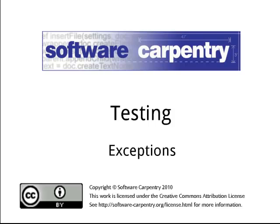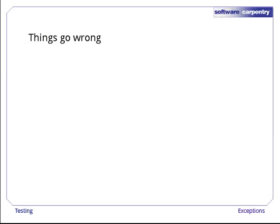Hello and welcome to the second episode of the Software Carpentry lecture on testing. In this episode, we're going to show you how to handle errors in programs using exceptions. Strictly speaking, this isn't part of testing, but we have to put it somewhere, and since you're going to want to test how your programs behave when things don't go as planned, this seems like as good a place as any. It's a sad fact, but things sometimes go wrong in programs.